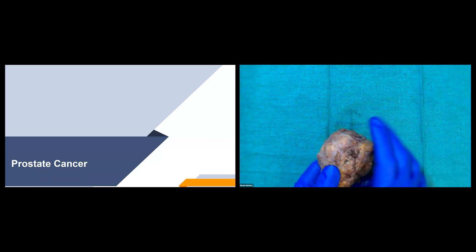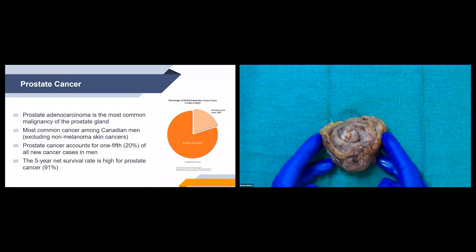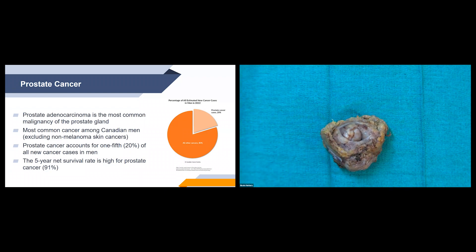Our specimen today is out for prostate cancer. Prostate adenocarcinoma is the most common malignancy of the prostate gland. It's the most common cancer in Canadian men, excluding non-melanoma skin cancers. Prostate cancer accounts for one-fifth of all new cancer cases in men, and it's estimated that about one in eight Canadian men will develop prostate cancer during their lifetime. There is a good survival rate though, with a 91% survival in five years, and most men will die with prostate cancer rather than from it.